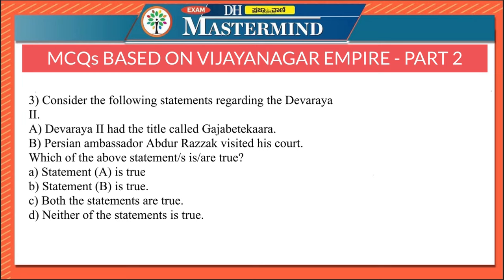The third question considers statements regarding Devaraya 2. Statement A says Devaraya 2 had the title Gajabetekara; Statement B says Persian ambassador Abdur Razak visited his court. Both statements are true — Option C. Devaraya 2 was the greatest Sangama ruler, belonging to the Sangama dynasty.